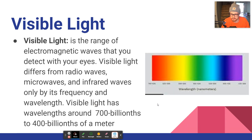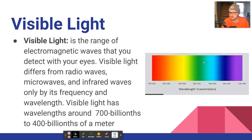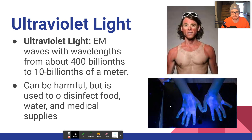Visible light: each color has its own frequency. Red is the lowest energy, then orange, yellow, green, blue, cyan, indigo, and violet — that's why what comes after violet is called ultraviolet, because it's just beyond the violet frequency we can see.